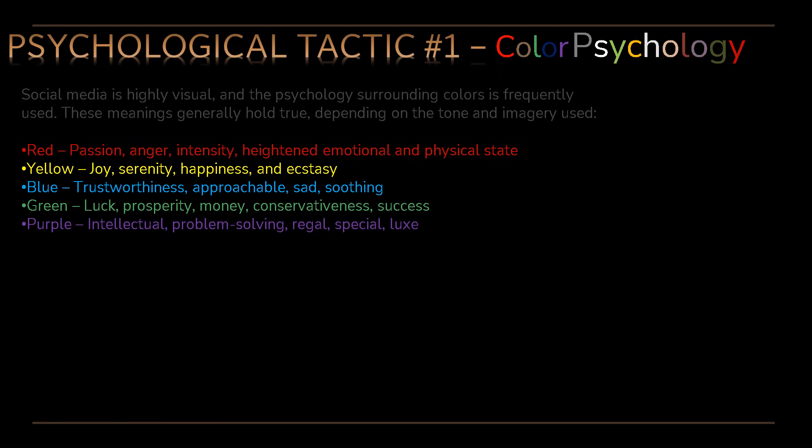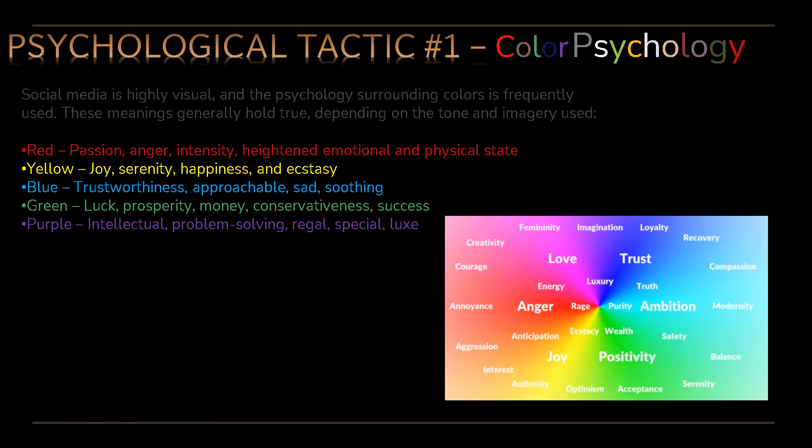Psychological tactic number one: color psychology. Social media is highly visual and the psychology surrounding colors is frequently used. Generally speaking: red conveys passion, anger, intensity, and heightened emotional and physical state; yellow means joy, serenity, happiness, and ecstasy; blue suggests trustworthiness, approachability, sadness, and soothing; green represents luck, prosperity, money, conservativeness, and success; and purple conveys intellectual problem-solving, regality, and luxury. There's a color wheel with the different emotions tied to each. That's tactic number one — we see it used all over the place.